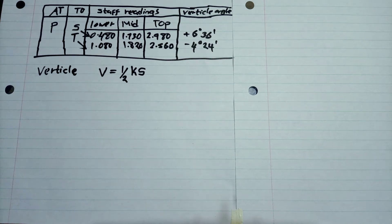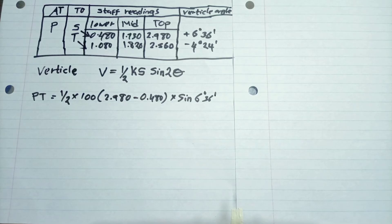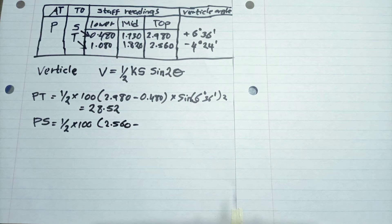So we go to the vertical distances. That is V equals half K times S times sine 2 theta. So that is multiply the angle by 2. So I have 100 times S, which is the difference between the top stadia reading and the bottom stadia reading, times sin 6.